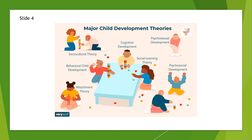More recent theories outline the developmental stages of children and identify the typical ages at which these growth milestones occur. Some of the major theories of child development are known as grand theories — they attempt to describe every aspect of development, often using a stage approach. Others are known as mini-theories, focusing only on a fairly limited aspect of development, such as cognitive or social growth. The major theories include sociocultural theory, behavioral child development, attachment theory, cognitive development, psychosexual development, psychosocial development, and social learning theory.